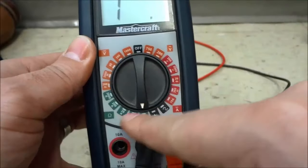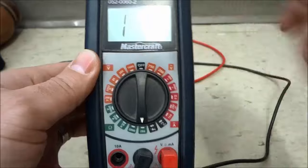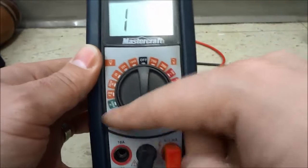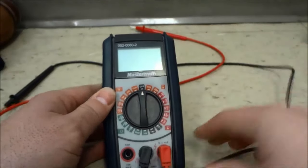This section right here in green is for testing resistance. It tests the resistance in ohms. I'm going to turn it off and go over some of the other functions.